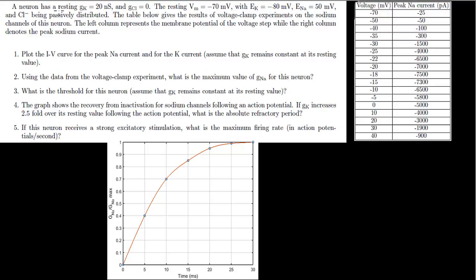In this problem, we have a neuron with a potassium channel conductance of 20 nanosiemens, while the chloride channels have no conductance, so we can pretty much ignore the chloride current. We're given a resting potential of negative 70 millivolts, a potassium equilibrium potential of negative 80 millivolts, and a sodium equilibrium potential of 50 millivolts. Chloride is passively distributed, so it doesn't matter.